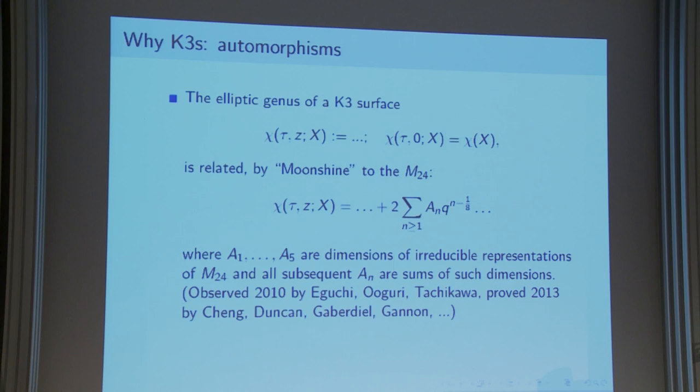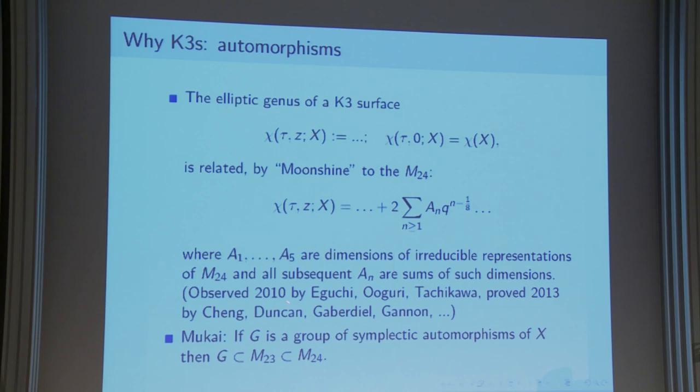I got this paper from Eguchi, Ooguri, and Tachikawa as a submission to the Journal of Experimental Mathematics — I was one of the editors — and I was really stunned that something like this can happen. This was established recently by several groups of people with independent publications, so it's a theorem. That particular group has something to do with another group in algebraic geometry: Mukai established that if you have symplectic automorphisms of a K3, they are embedded into M23.